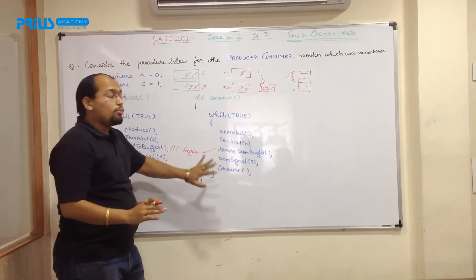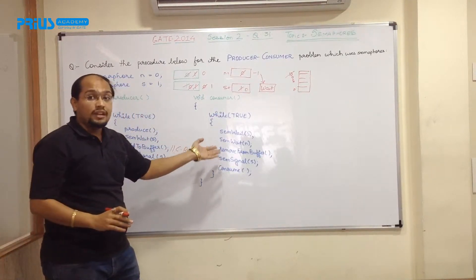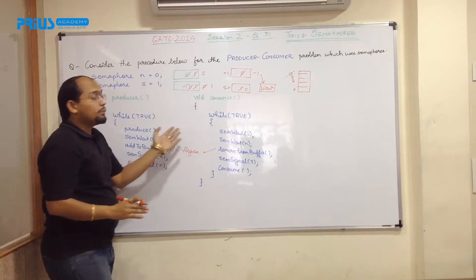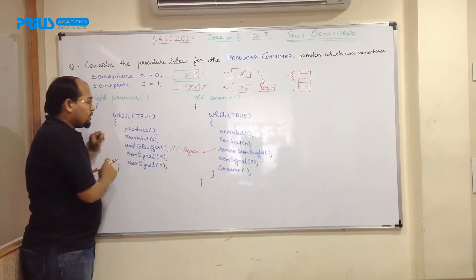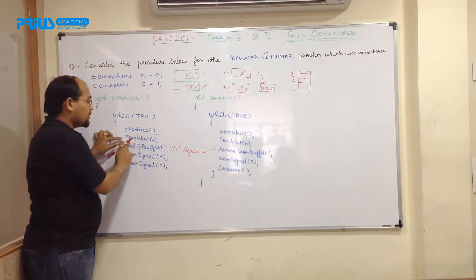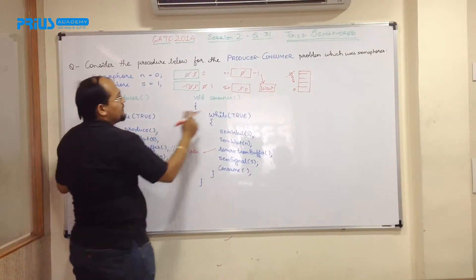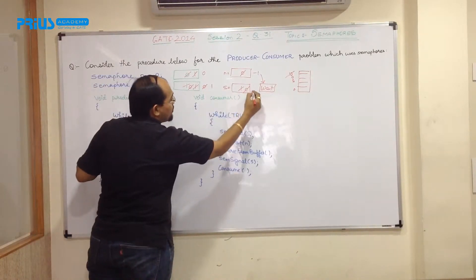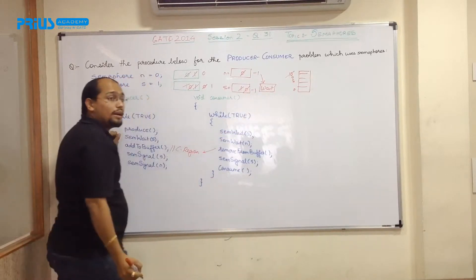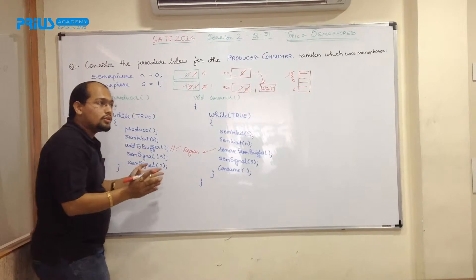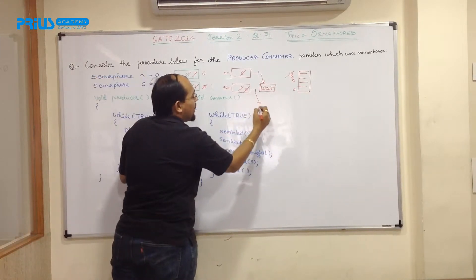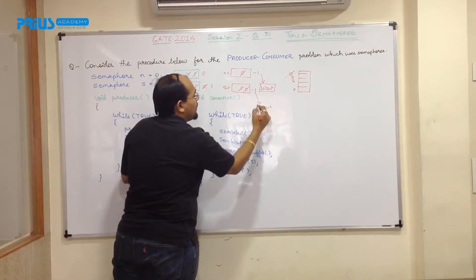So if it cannot proceed further, now producer don't know whether consumer has entered the critical section. So producer may think, okay, let me start executing the program. So what it will do? It will start producing, it will make semaphore wait S. So that means this will be now decremented to minus 1. Again, minus 1 indicates that the process cannot proceed further and again it will be explicitly in a waiting mode.